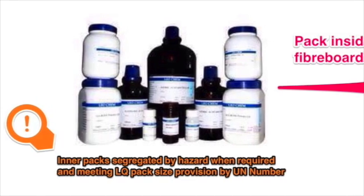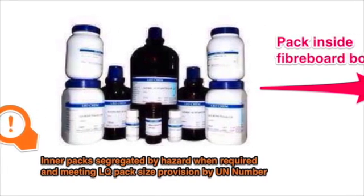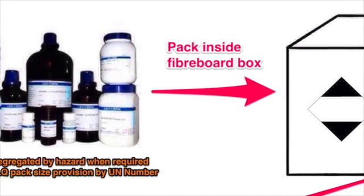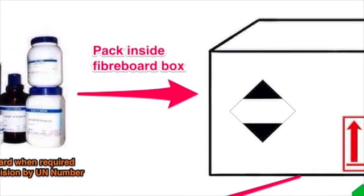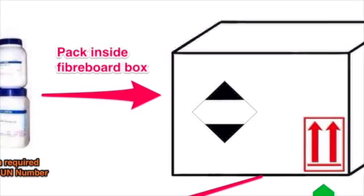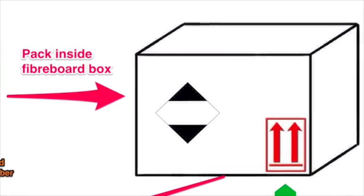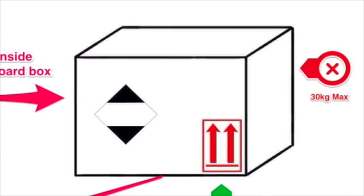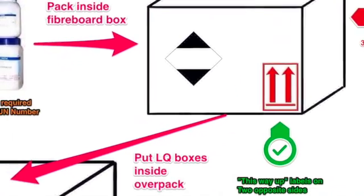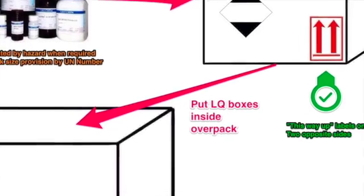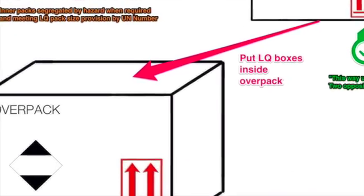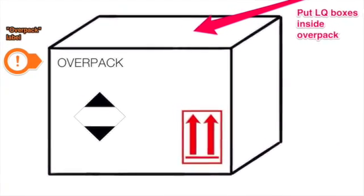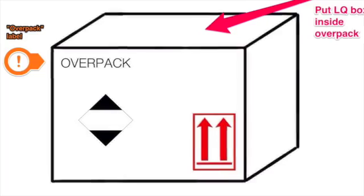Outer packages such as fibreboard boxes are marked with a limited quantity label and, if they contain liquids, 'this way up' labels on two opposite sides. Overpacks are also labelled if the contents are not visible, and in addition must be marked with the word 'overpack'.